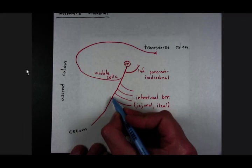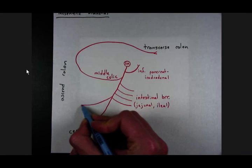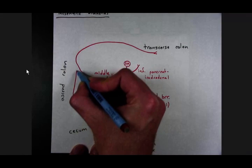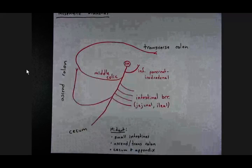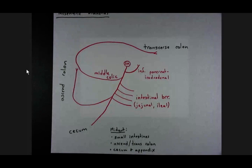There's also the right colic. Right colic artery is going to primarily take care of the ascending colon.